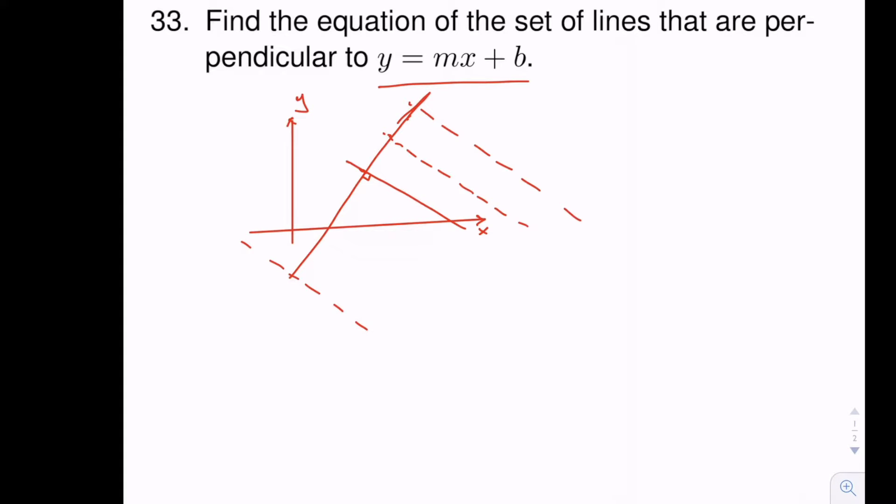As you can see, these are all parallel to each other. So all of these lines have the same slope, and therefore it makes sense to find the slope of the lines that are perpendicular to our given line.